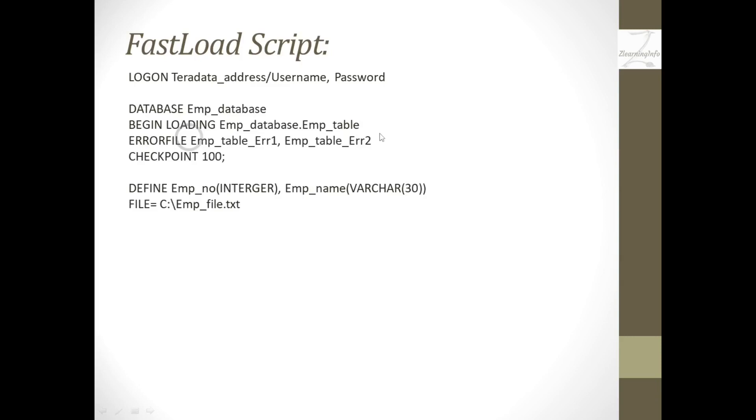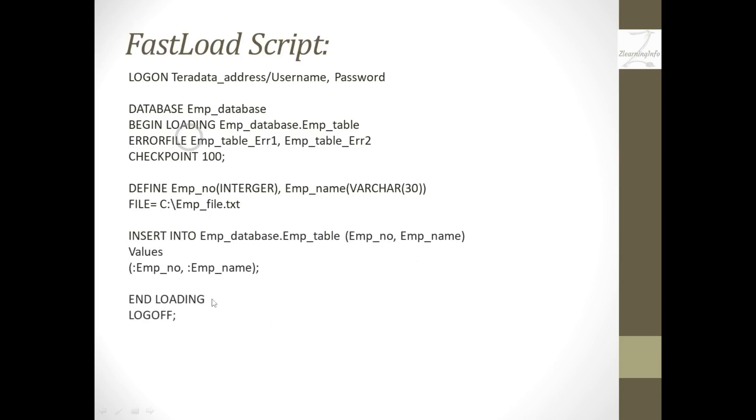Now let us see a sample FastLoad script. To create a FastLoad script, first we specify the login details, then the database and table details. Once that is done, we define the table fields in the input file and specify the field name including the location of the file. After which, we can insert the data from the file to the table using an INSERT statement. At the end, we specify the END LOADING command and LOGOFF command to indicate the end of the script.